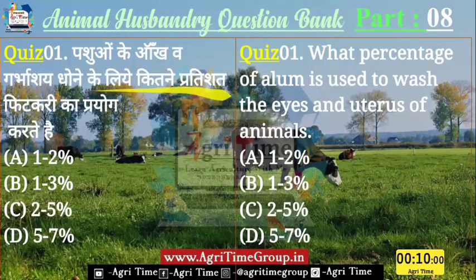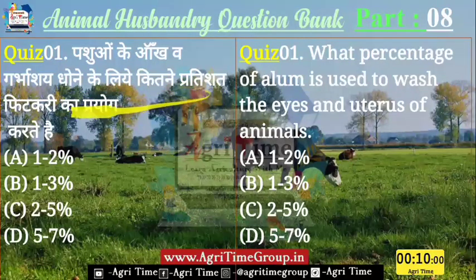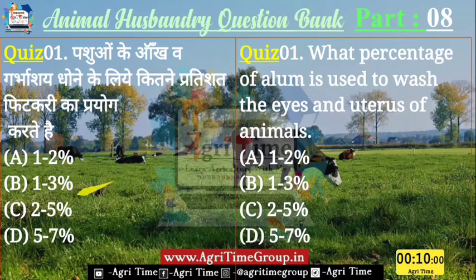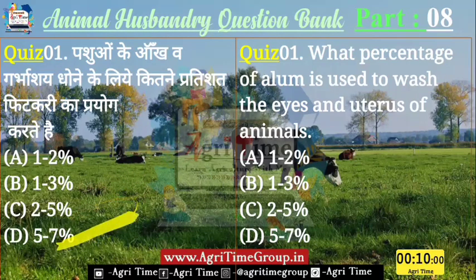चलिए आज के पशु पालन question bank का पहला question देखते हैं। कितने प्रतिशत बोरिक एसिड का प्रयोग किया जाता है पशु के आँख वागर भास धोने के लिए — यह पूछा जा रहा है। Option में दिये हैं: 1-2%, 1-3%, 2-5% और 5-7%। मैं आपको 10 सेकंड का time दूँगा — आपको answer comment box में comment करना है।